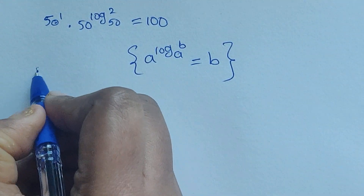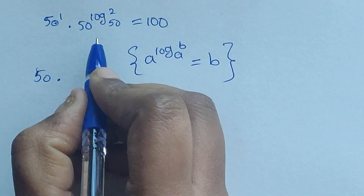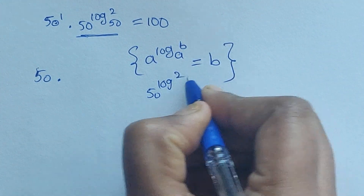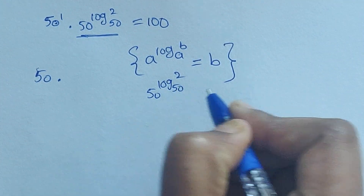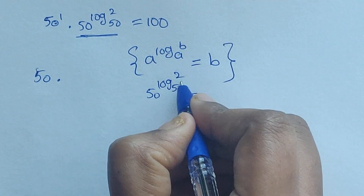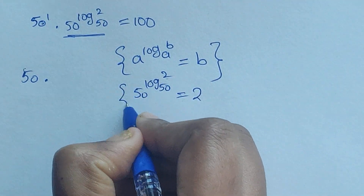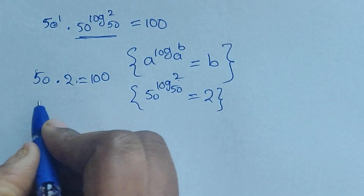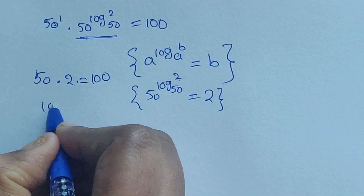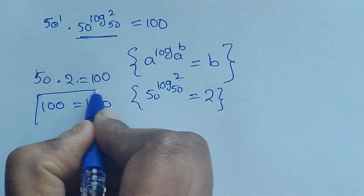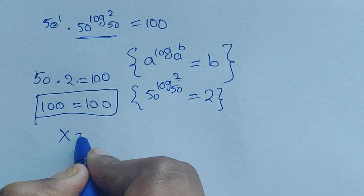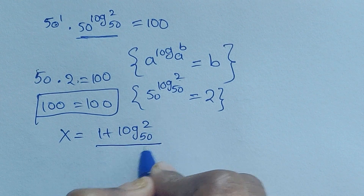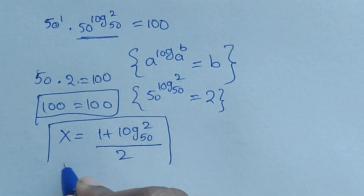Now applying the formula a to the power of log of b base a equals b, we get 50 to the power of log of 2 base 50 equals 2. So we have 50 times 2 equals 100, and 100 equals 100. This confirms our answer: x equals (1 plus log of 2 base 50) divided by 2.